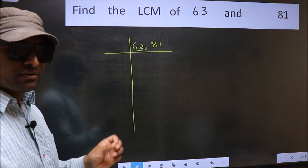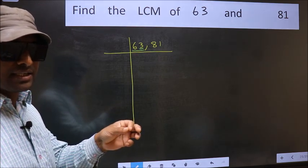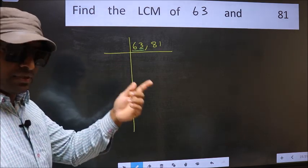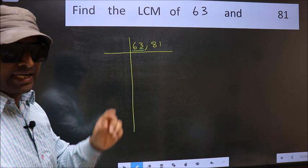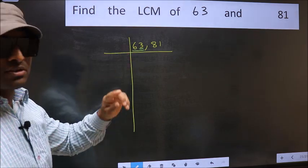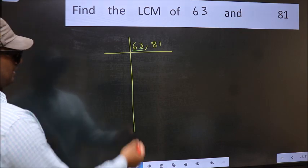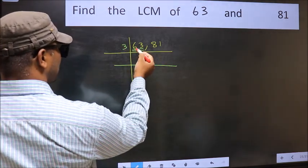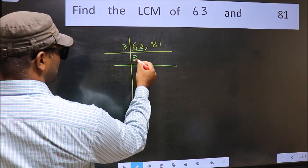To check divisibility by 3, we should add the digits: 6 plus 3 we get 9, and 9 is divisible by 3, so this number is also divisible by 3. So take 3. First number 6, when do we get 6 in 3 table? 3 times 2 is 6.